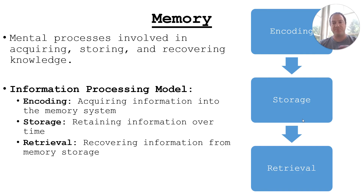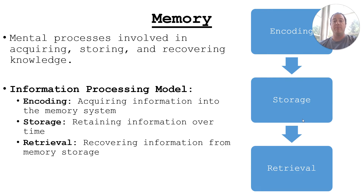In the information processing model, there are three steps: encoding, storage, and retrieval. Encoding is when we acquire information to send to our memory — our experiences that move from conscious awareness into memory. Storage is when that information moves from our conscious level of awareness into storage, whether short-term or long-term. Retrieval is when we take information from memory storage and bring it back into our conscious awareness.